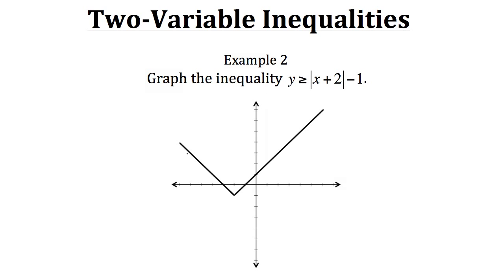So let's graph the absolute value of x plus two minus one. That's what the expression would look like. But now we need to take into consideration the inequality — y is greater than or equal to the absolute value of x plus two minus one. That's what our entire inequality would look like. Since y is greater than or equal to that expression, we have a solid line because it can be equal to, but it can also be anything greater than that expression.